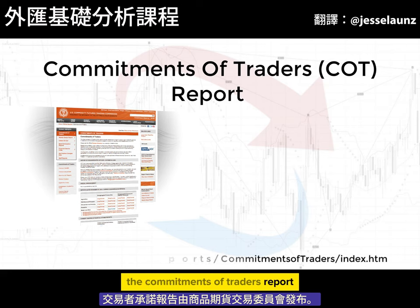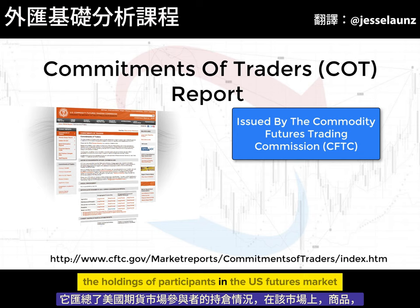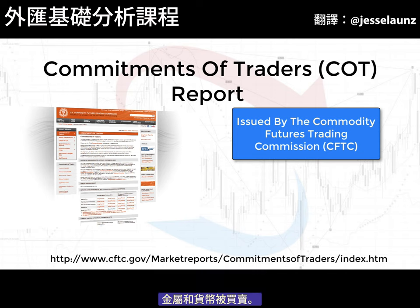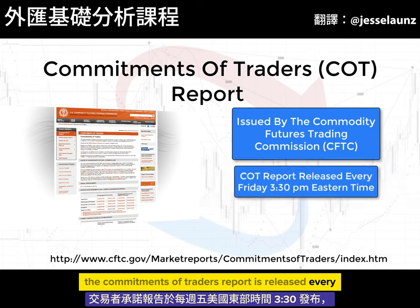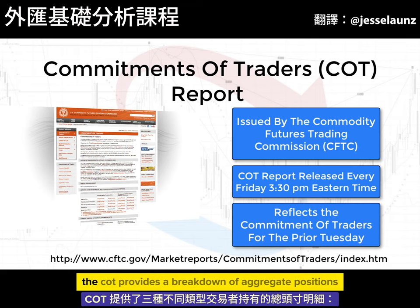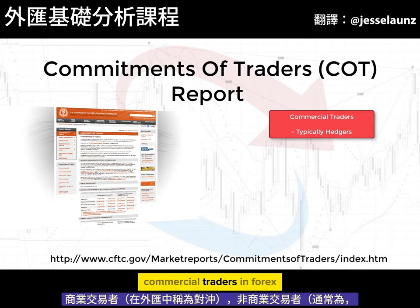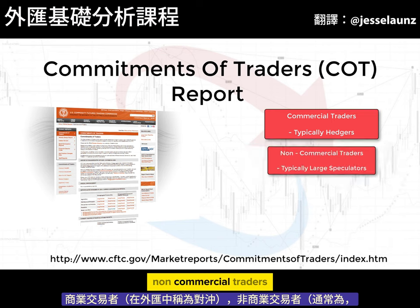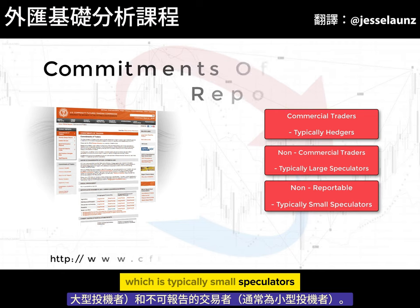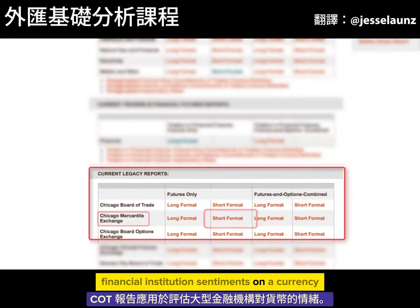The Commitments of Traders report is issued by the Commodities Futures Trading Commission. It aggregates the holdings of participants in the US futures market, where commodities, metals, and currencies are bought and sold. The COT report is released every Friday at 3:30 US Eastern Time and reflects commitments of traders for the prior Tuesday. The COT provides a breakdown of aggregate positions held by three different types of traders: commercial traders (in forex known as hedges), non-commercial traders (typically large speculators), and non-reportable (typically small speculators).